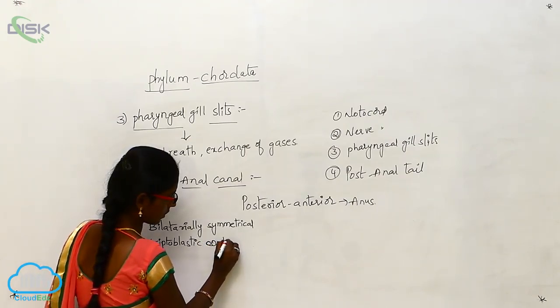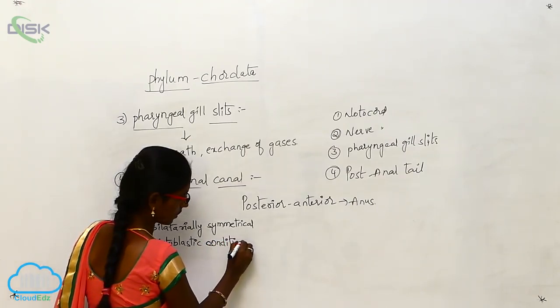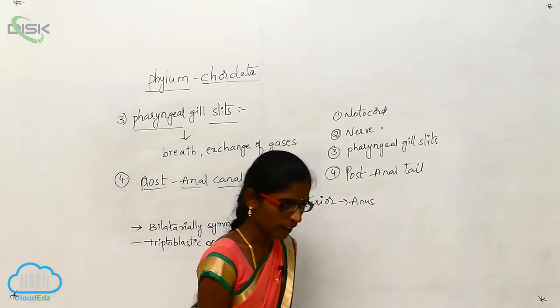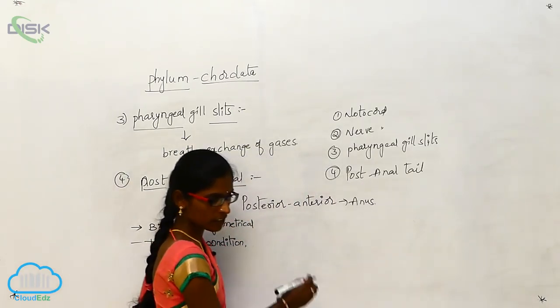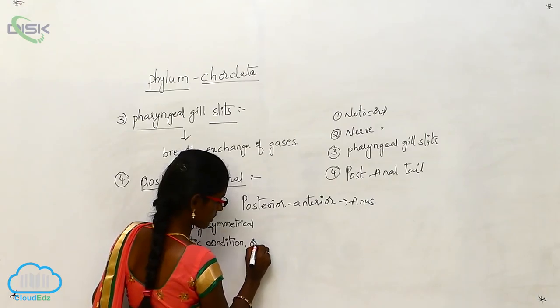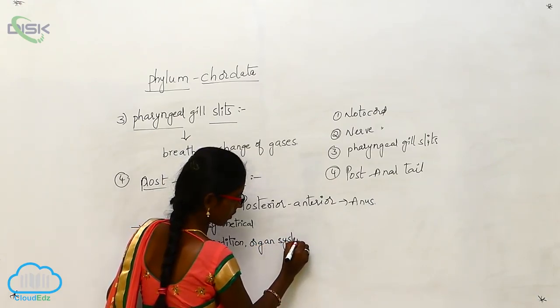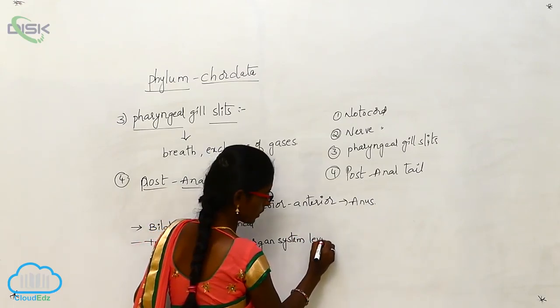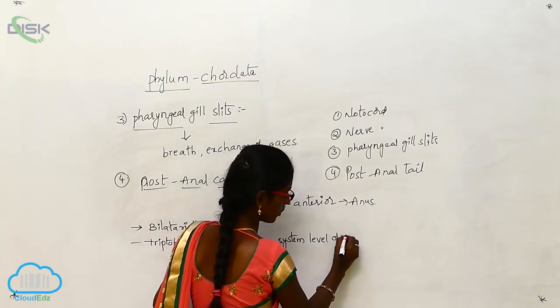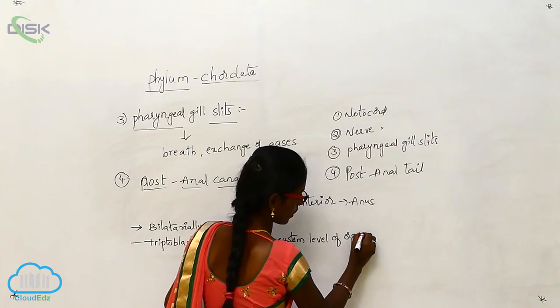Triploblastic condition and organ system level of organization. Organ system level of organization.